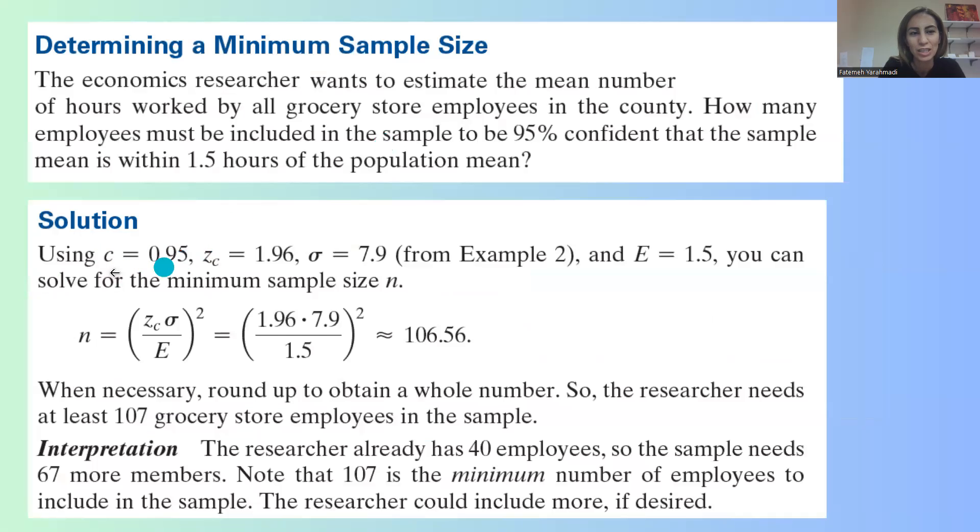So c is 95%, zc is 1.96. Remember that from the example, sigma is given to us as 7.9 hours, and e, the margin of error, is 1.5 because of this description.